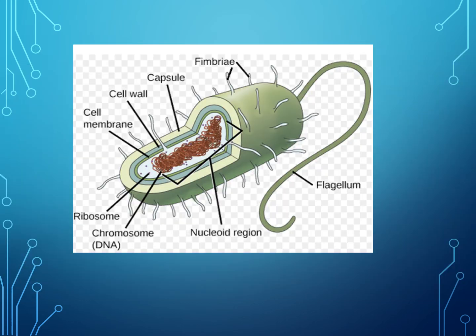So let's have a look at our prokaryotic cell. You have the fimbriae, capsule, cell wall, cell membrane, ribosome, chromosomal DNA, nuclear region, and flagellum.